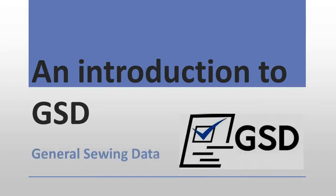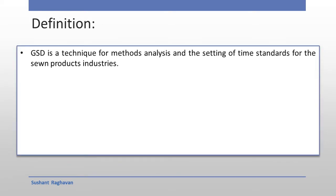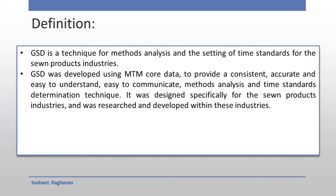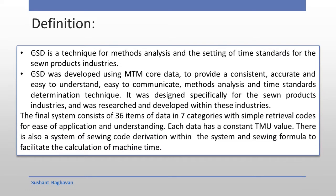An Introduction to GHD — General Sewing Data. Definition: GHD is a technique for methods analysis and the setting of time standards for the sewing product industries. GHD was developed using MTM code data to provide a consistent, accurate, easy to understand, and easy to communicate methods analysis and time standards determination technique. It was designed especially for the sewing products industries and was researched and developed within these industries. The final system consists of 36 items of data in seven categories with simple retrieval codes for ease of application and understanding.